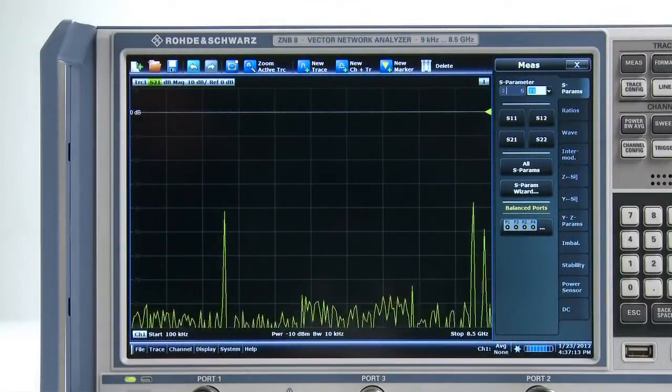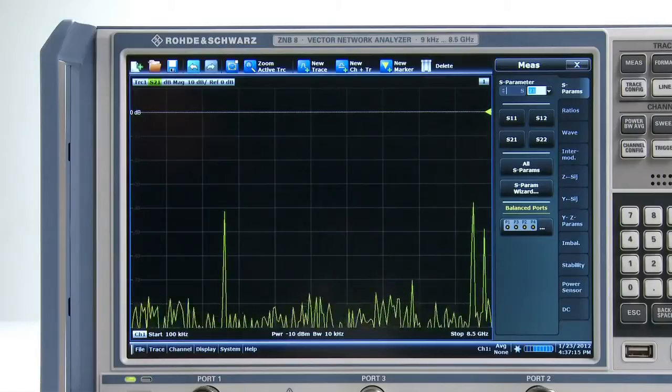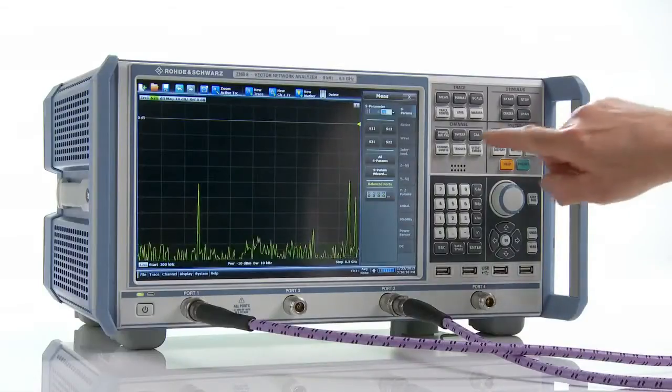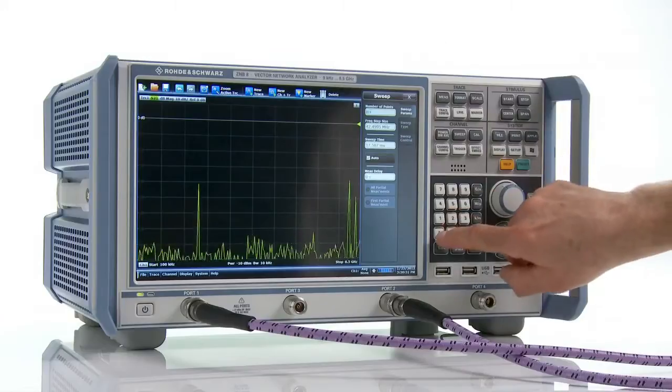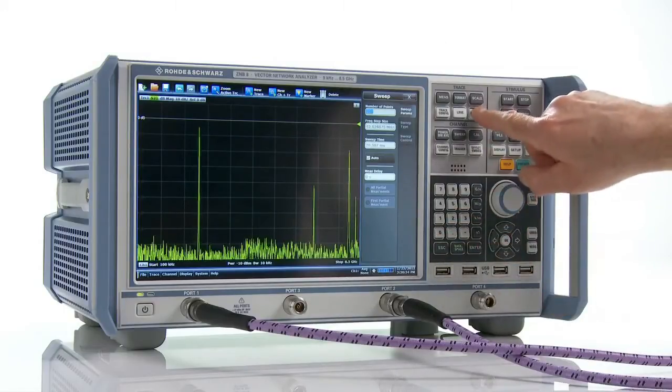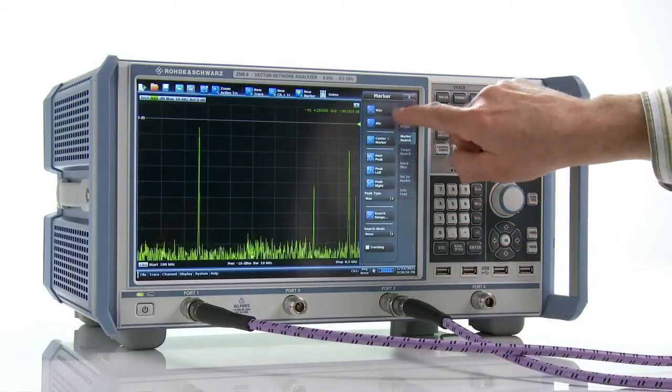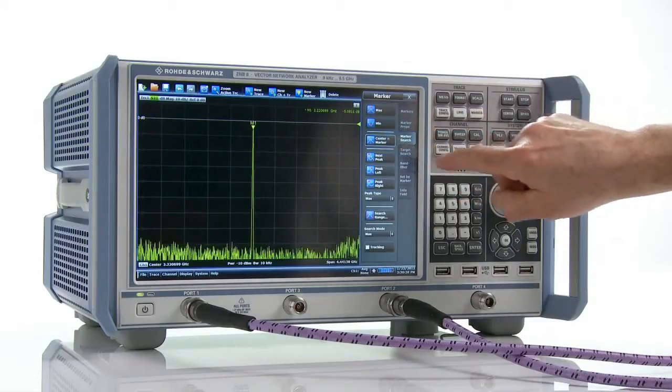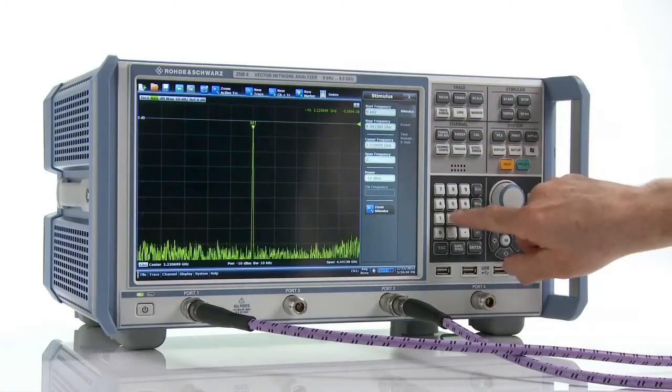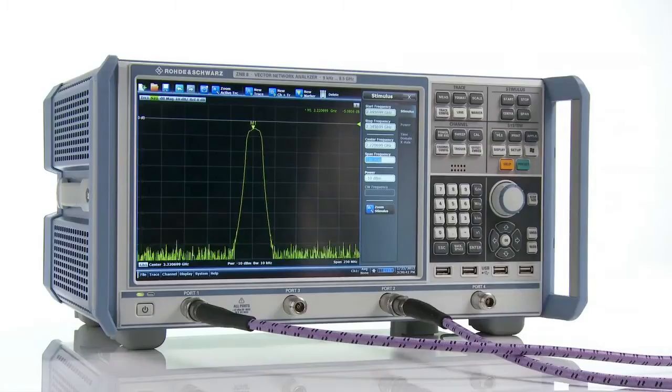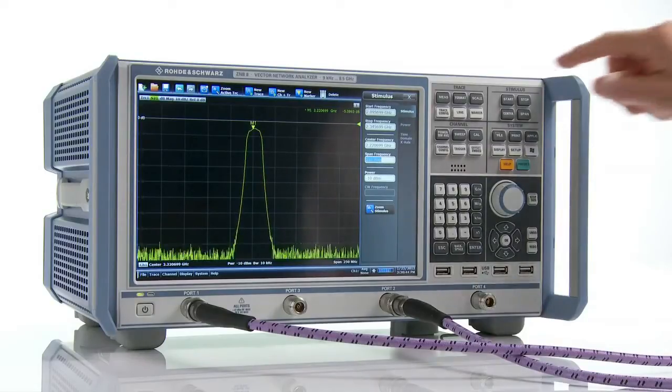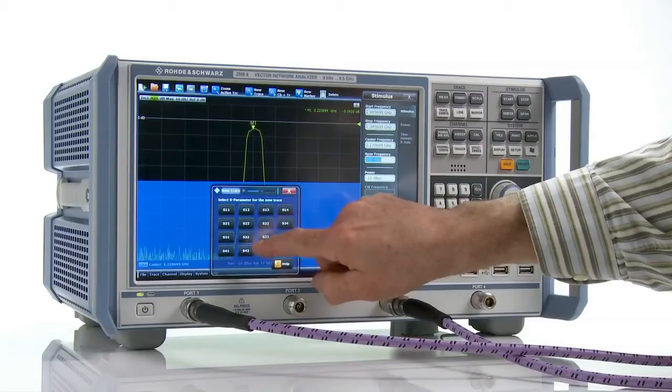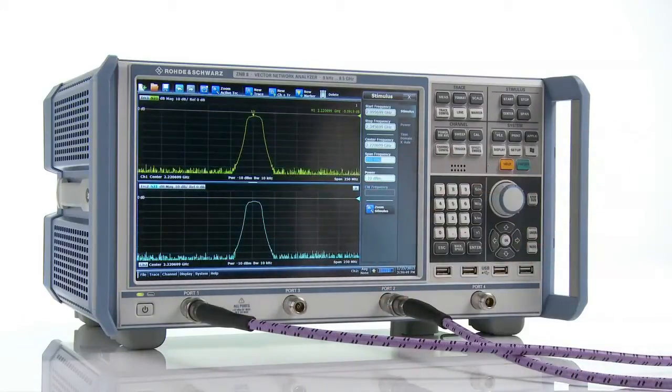Now, we'll use a filter measurement to show how quickly and easily you can do a typical measurement with the Rohde & Schwarz ZNB. The filter trace is centered for a wideband test and the frequency span and number of measurement points are set. To characterize the filter, we create a new measurement window by simply dragging an S-parameter from the soft panel menu to the desired screen position.